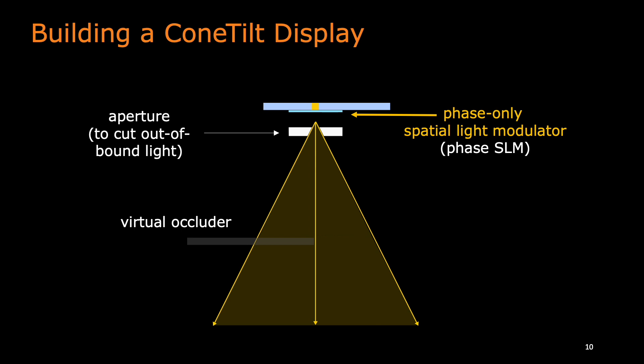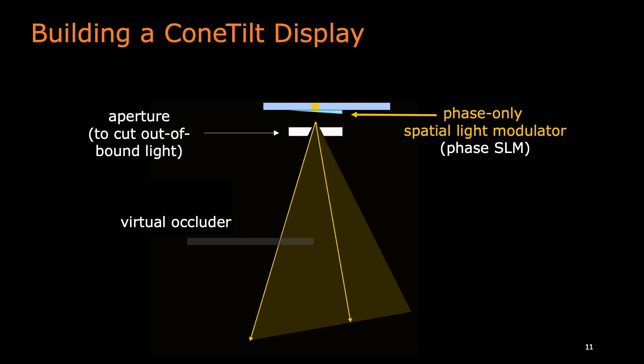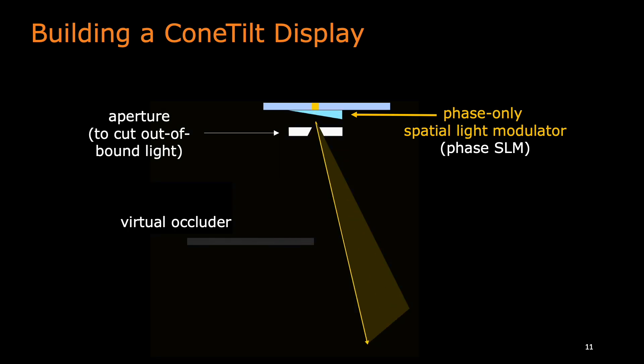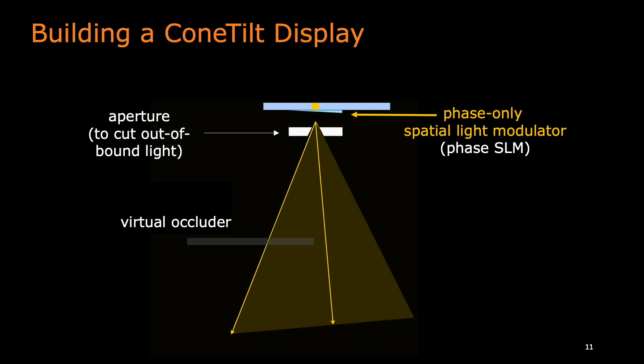The capability to tilt the light cone can be achieved by placing a phase-only spatial light modulator, or phase SLM, directly on the display panel. By changing the slopes of the phase function shown on the phase SLM, we can control the tilting angle of each pixel.